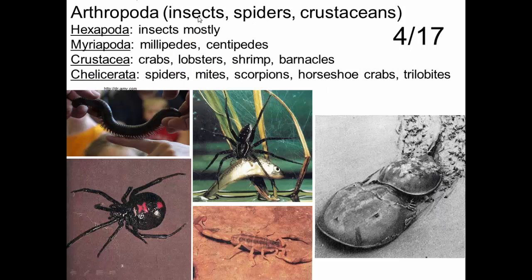Now looking at arthropods — arthropods are insects, spiders, crustaceans. The Arthropoda phylum has four major subphyla, and that's only four out of the original 17 we're able to identify from the Burgess Shale. Arthropoda includes hexapods, which are mostly insects — all insects are hexapods, but not all hexapods are insects — myriapods, which are millipedes and centipedes, crustaceans, which are crabs, lobsters, shrimp, and barnacles, and chelicerates, which are spiders, mites, scorpions, horseshoe crabs, and trilobites.